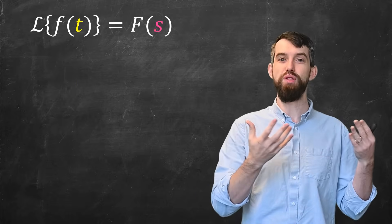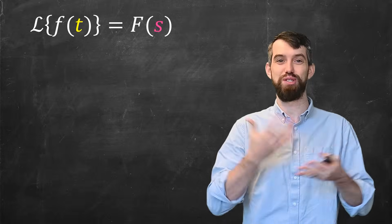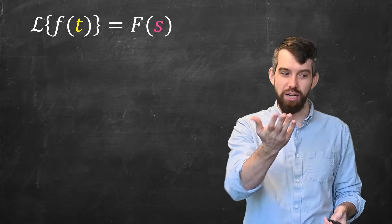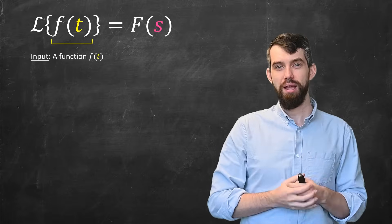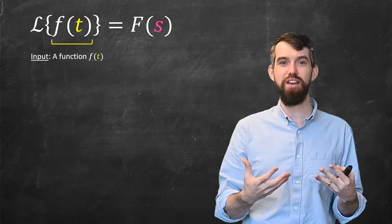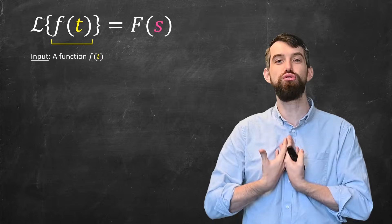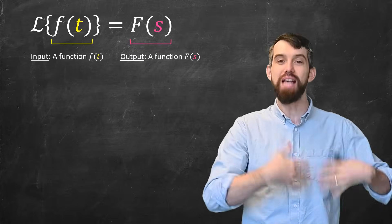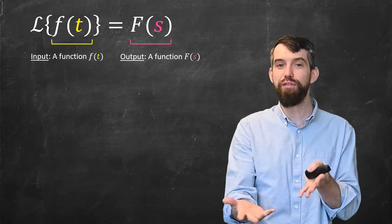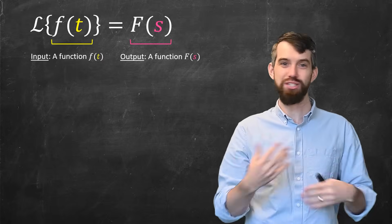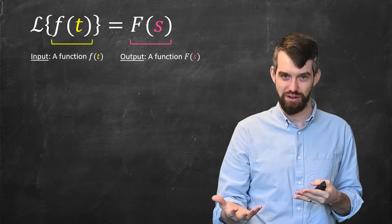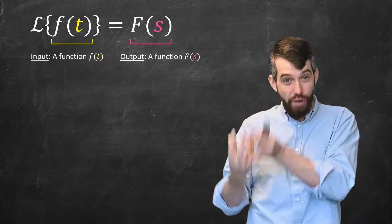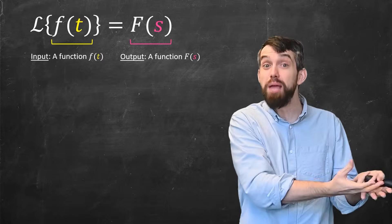The notation for the Laplace transform is a sort of squiggly L, and what this squiggly L does is it has an input which is some function of t. You're going to take that f(t) and via the Laplace transform you're going to transform it into some other function — now a capital F — and this other function depends on some other variable, now s. So the Laplace transform is kind of like a function which would take a point to a point, but a Laplace transform takes a function to a different type of function.